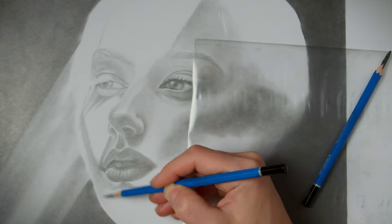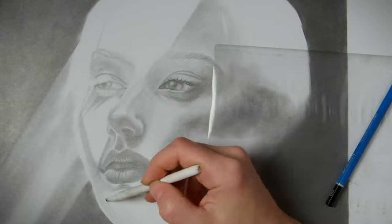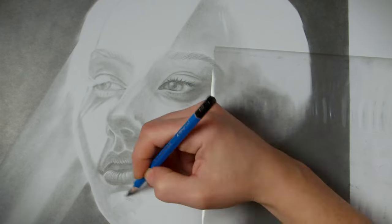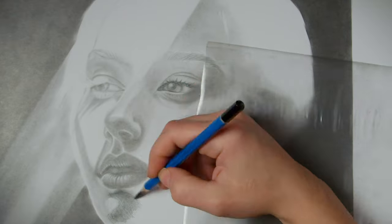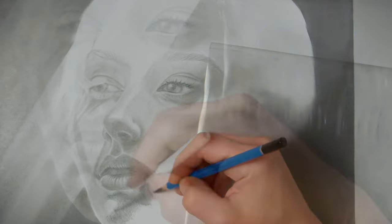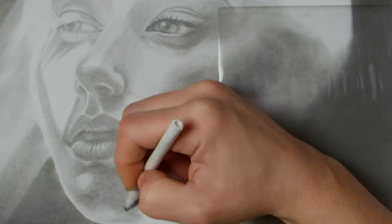By the way, Faber-Castell has a series called Pitt Graphite. These are matte graphite pencils that shine less than usual. The softness among them is 14B, allowing you to create very dark details in the drawing without unnecessary shine.